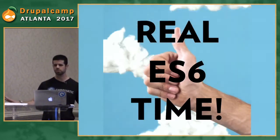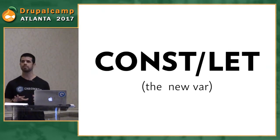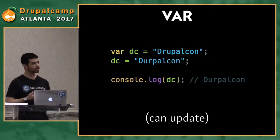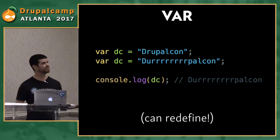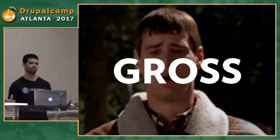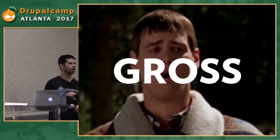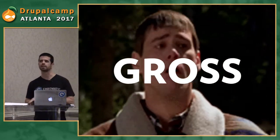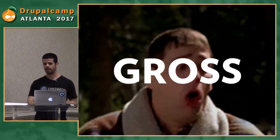Let's get into real ES6 features. Let's talk about const and let — what some people refer to as the new var. Var has some problems: var can be updated and redefined. So 'var DC = DrupalCon' then 'var DC = DrupalCon' again — no error. That's problematic in a large file where you might redefine a var way down in your scope and another developer can't figure out why something isn't returning what they expect.